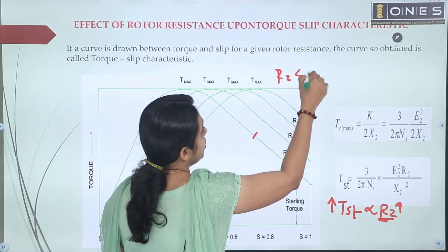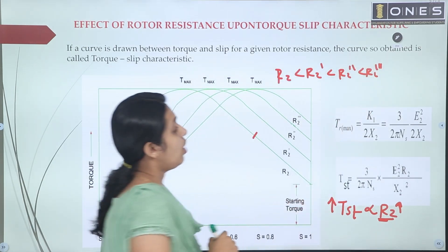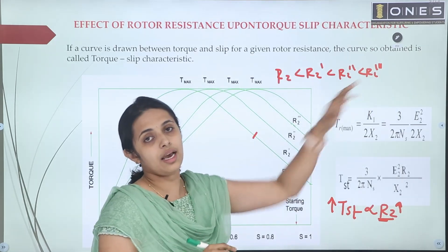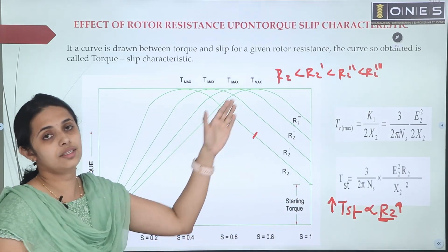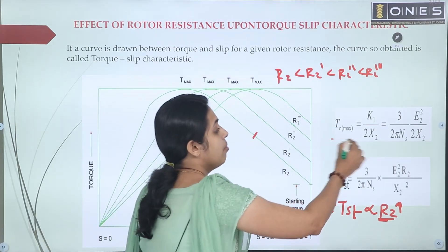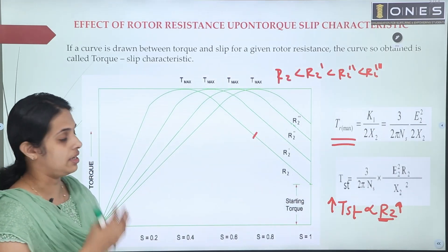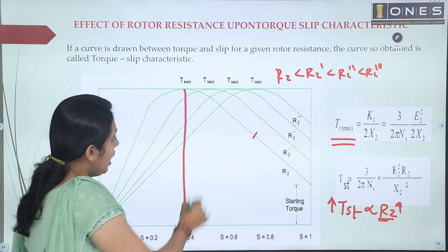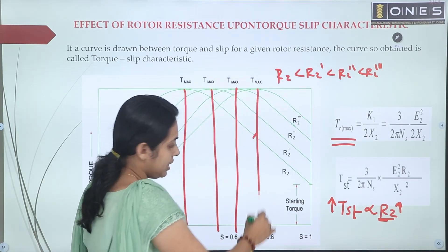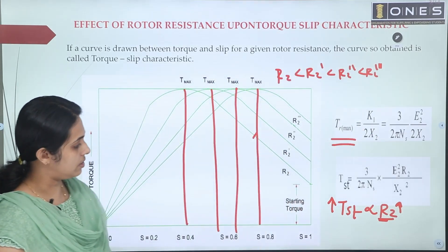If we increase the value of R2, the maximum torque is independent of rotor resistance — it is always the same, so there is no change in the magnitude of maximum torque. Because maximum torque is independent of rotor resistance.